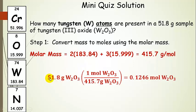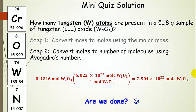Let's convert to moles: we take our 51.8 grams of tungsten oxide, divide by its molar mass, and end up with 0.1246 moles of tungsten oxide. Now we're in moles — we're at the top of our bridge. Now that we have moles, we can convert to numbers of molecules using Avogadro's number. Starting with 0.1246 moles of tungsten oxide: in one mole there are 6.022 times 10 to the 23 molecules, giving us 7.504 times 10 to the 22nd molecules of tungsten oxide.